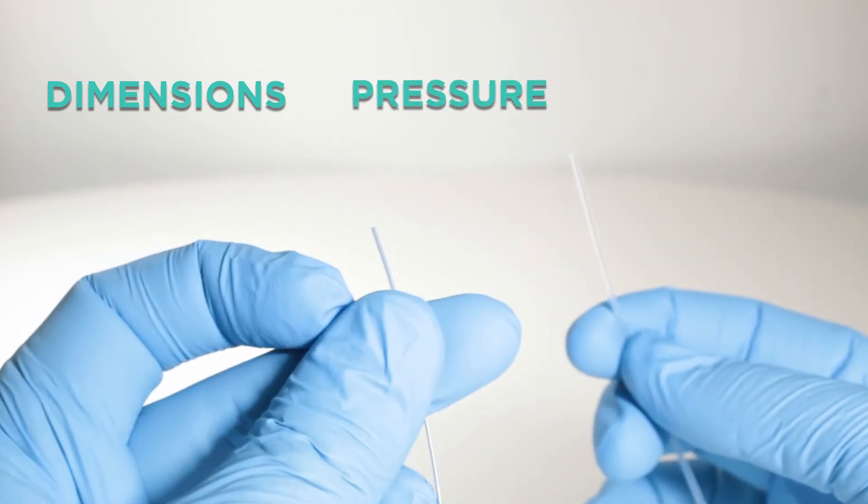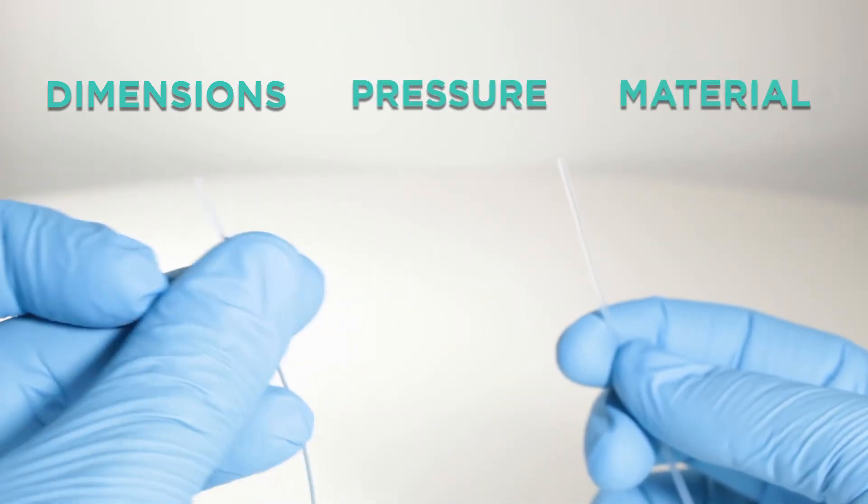Tubing. Several parameters must be taken into consideration in order to choose the tubing: its dimensions, the overall pressure to be applied inside, and the tubing material.